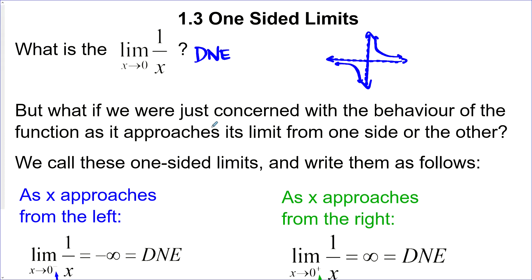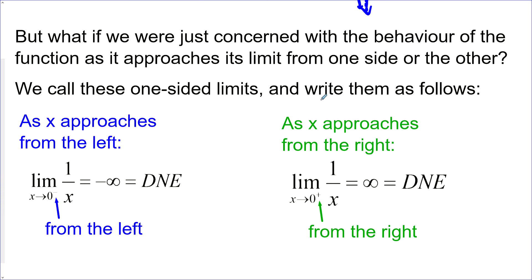What if we're just concerned with the behavior of the function as it approaches from one side or the other? We call these one-sided limits. If we want to approach from the left, we put a negative in the exponent position. So this is the limit of 1 over x as x approaches 0 from the left — it goes to negative infinity and therefore does not exist. Approaching from the right, we put a positive symbol in the exponent position — that goes off to positive infinity and therefore does not exist either.